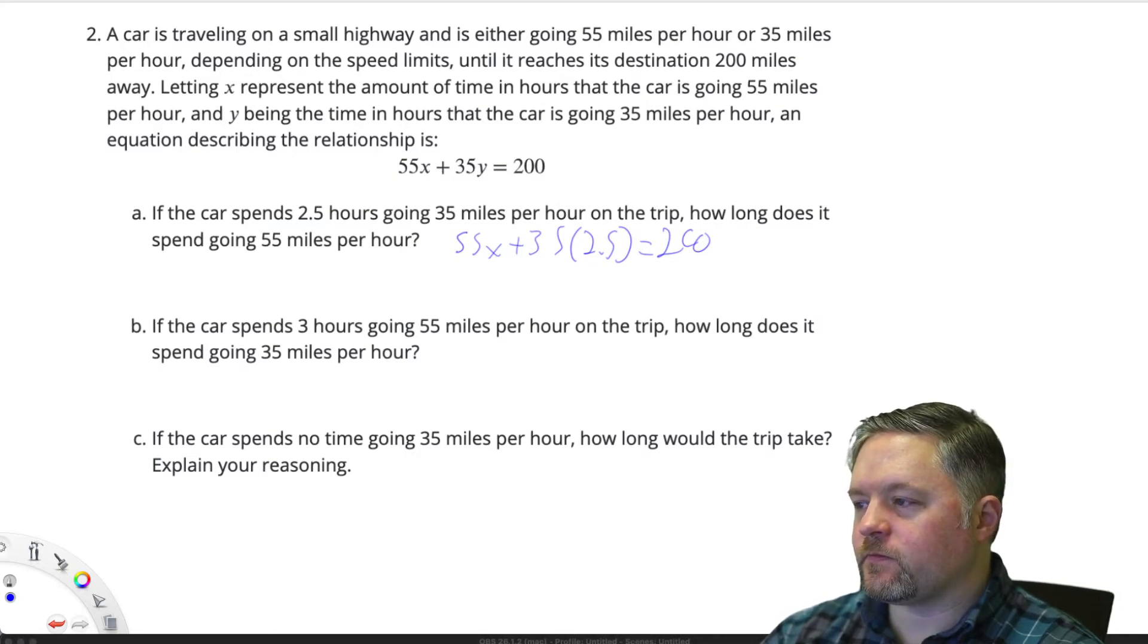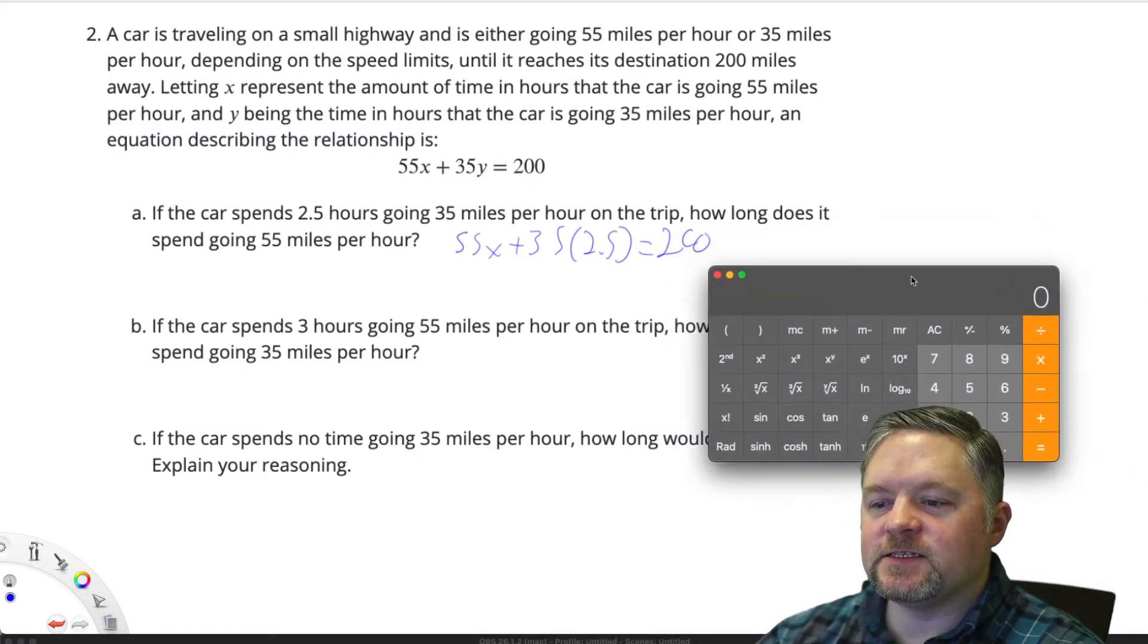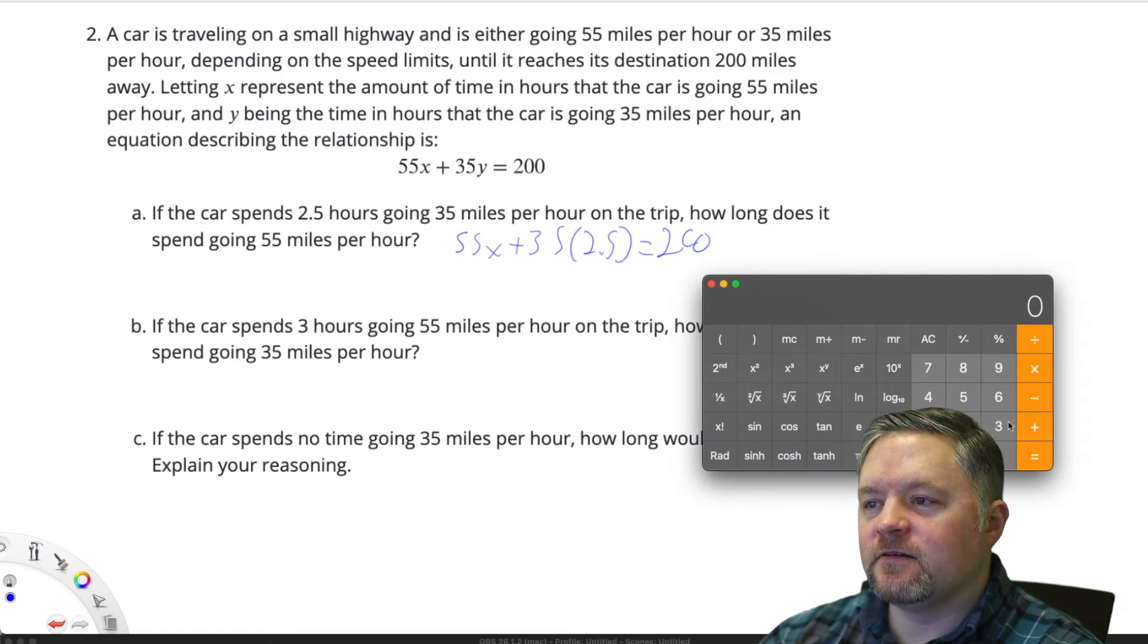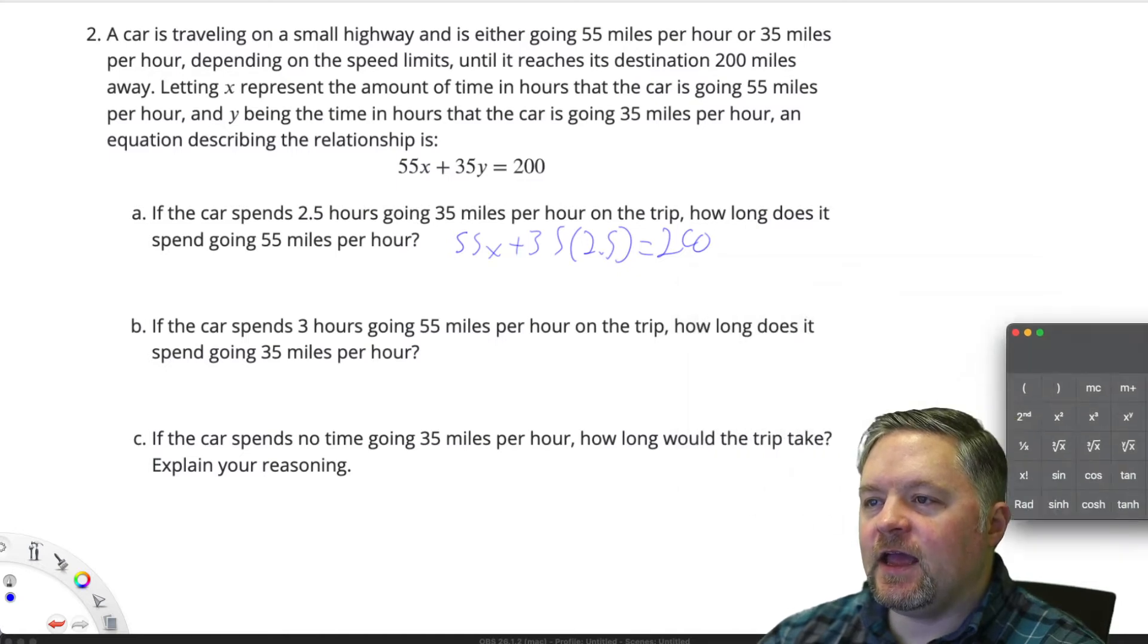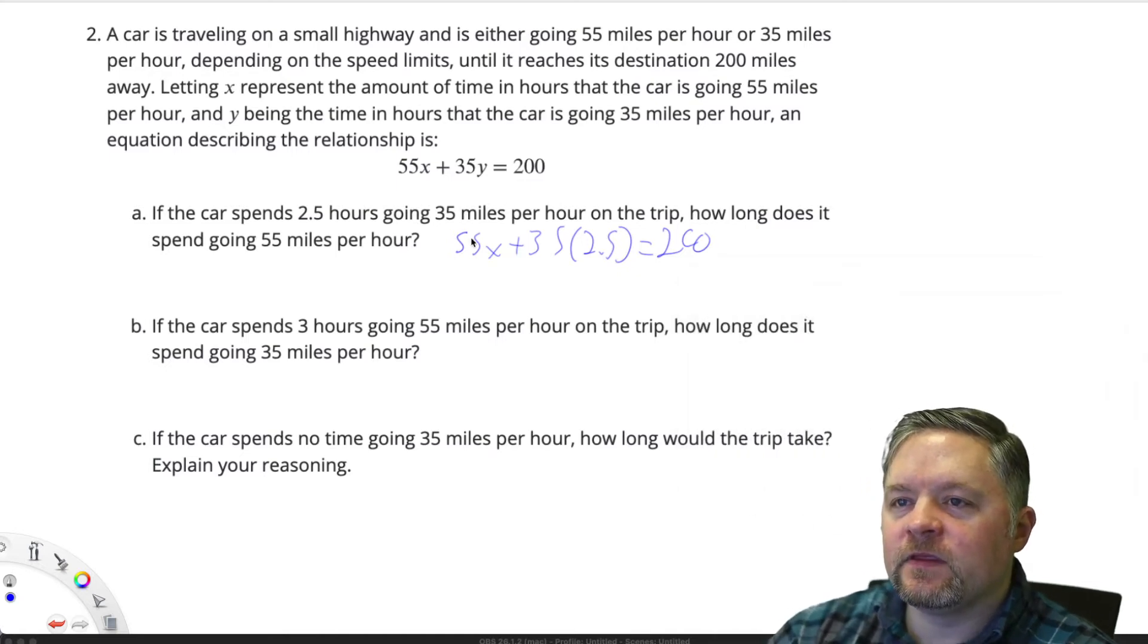Now, let's maybe sneak this guy in here. 35 times 2.5 is 87.5. Now, we'd have to subtract that 87.5 from each side.